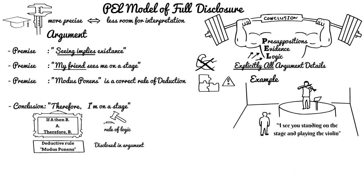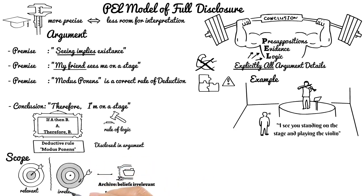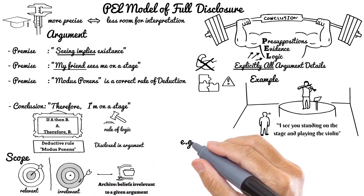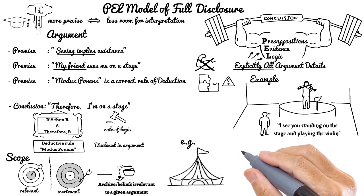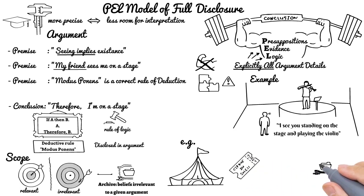What is important is that to achieve full disclosure, the logic used within our argument must itself be disclosed and another additional premise stating that modus ponens is a correct rule for deduction. And finally, to avoid extra thinking, we should narrow down the scope of discussion only to relevant things. We need to explicitly mention archive, which is a philosophical term about beliefs that are irrelevant to a particular given argument.